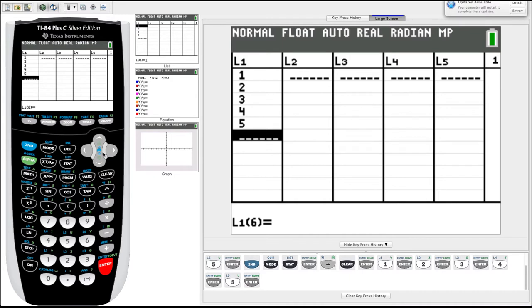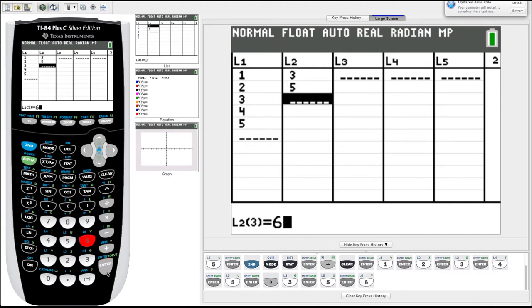And then so these, we can make these our x values later on, but we're going to need some y values when we start plotting. So let's enter some data into list two. Same way we did in list one, we just arrow over to the first cell, start typing in our numbers, hit enter after each one, it automatically brings us down to the next cell. All right, so now we have data entered in list one, list two.